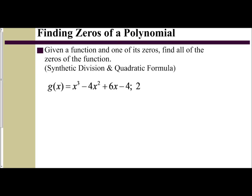In the following video, we are going to examine how to find all the zeros of a function when given just one zero. In these two examples, the process we're going to use is synthetic division followed by the quadratic formula. That process should look familiar because we've used it before in previous lessons in Chapter 6.